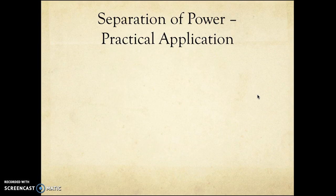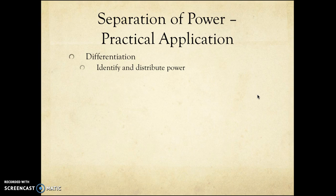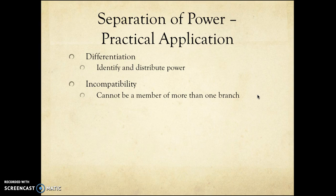There are four ways in which the separation of powers is applied in the United States. First, differentiation: we identify and distribute power — the legislature has that power, the executive has that power, the judiciary has that power. That's essentially the application of Montesquieu's theory. Second, incompatibility: if you're a member of one branch, you can't be a member of another. In the United Kingdom, this simply doesn't apply — you can't be in the executive unless you're in the legislature.